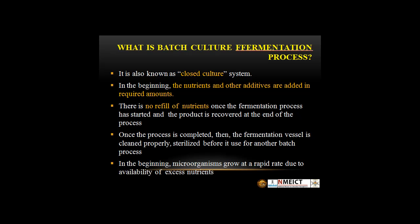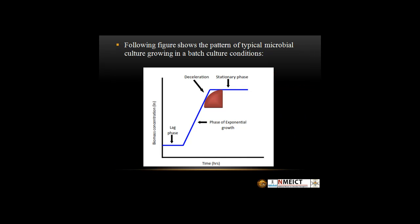In the beginning, microorganisms grow at a rapid rate due to the availability of excess nutrients. This picture shows the different phases of growth in batch: lag phase, exponential phase, deceleration phase, and the stationary phase.